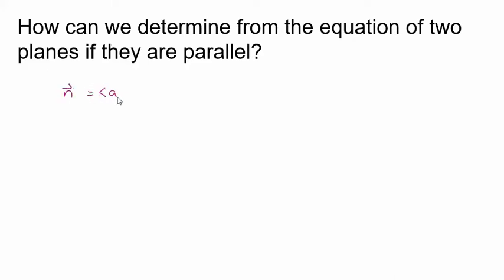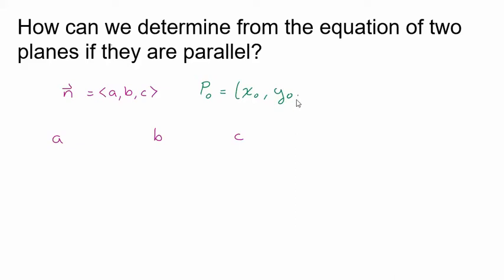Your normal vector is a vector that's perpendicular to your plane, usually denoted with a, b, and c. Then you have some point on your plane that you need to know. We'll call it p sub zero. This is a point that lies in your plane and we'll call that x sub zero, y sub zero, z sub zero.